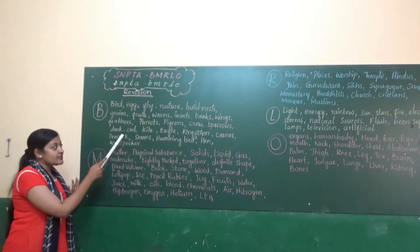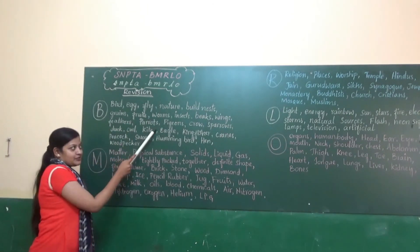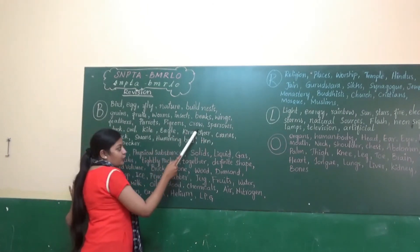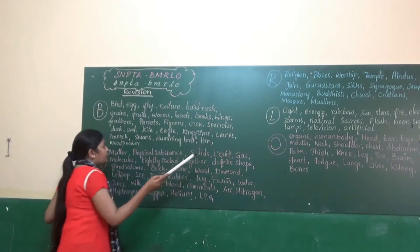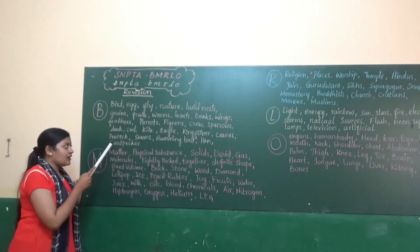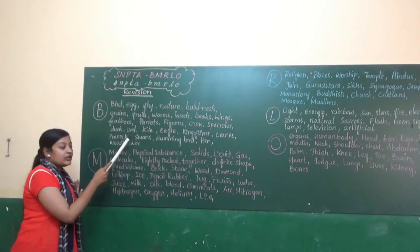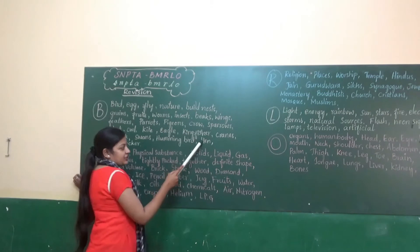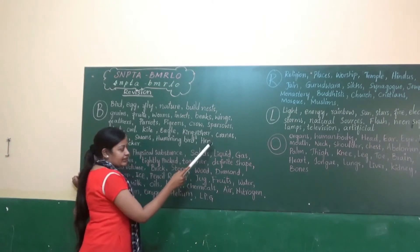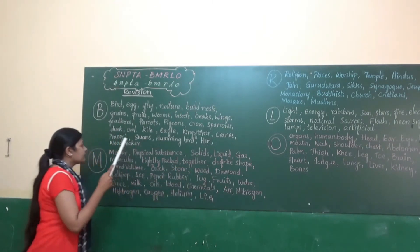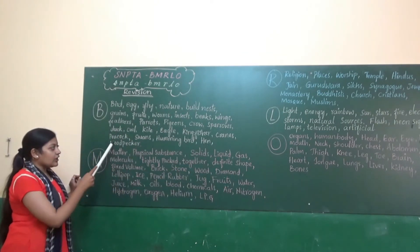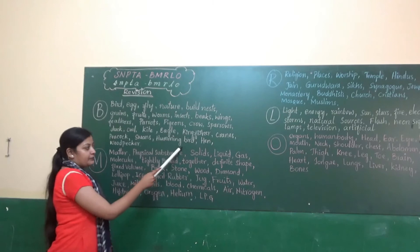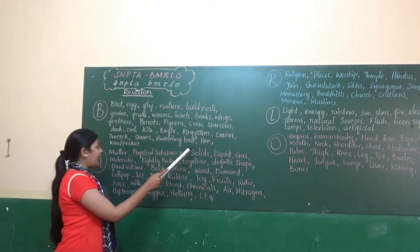Feathers, parrots, pigeons, sparrows, dove, owl, kite, eagle, kingfisher, cranes, peacock, swans, hummingbird, hen, woodpecker.